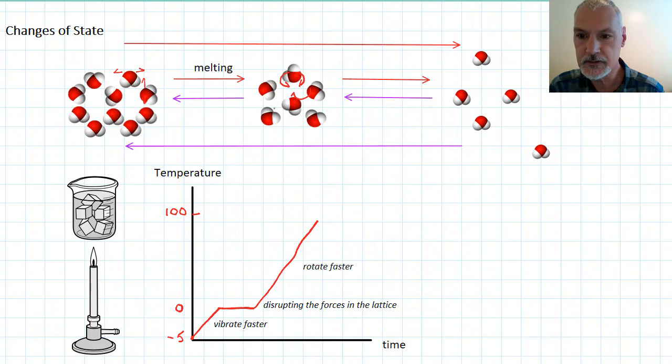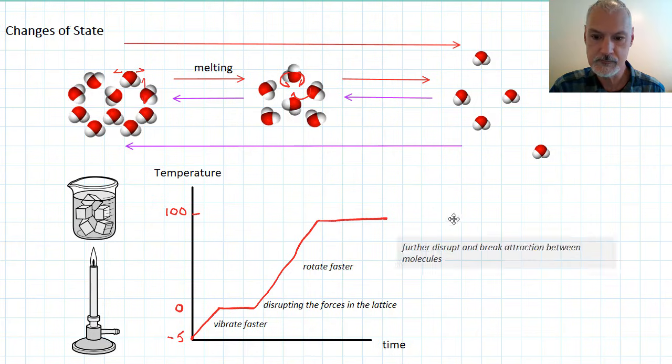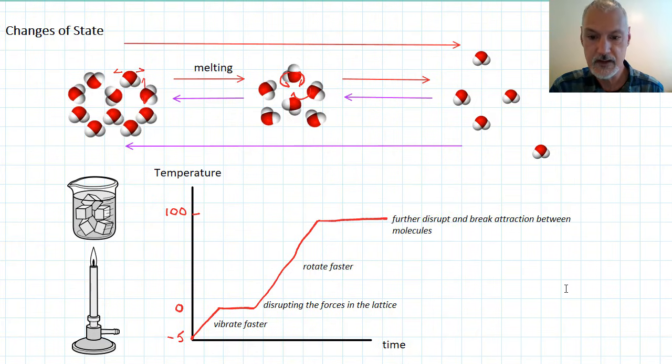Once we reach 100 degrees, additional energy is used to further break the bonds that exist between our particles. This then results in the formation of my vapor. And we call this stage vaporization.